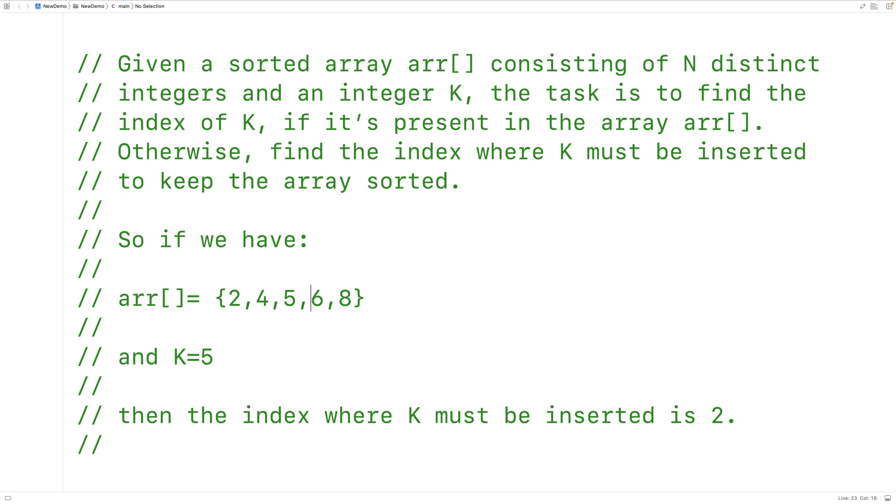And remember, we start counting indexes from 0 in C. So 2 here is at index 0, 4 is at index 1, and 5 would then be at index 2.